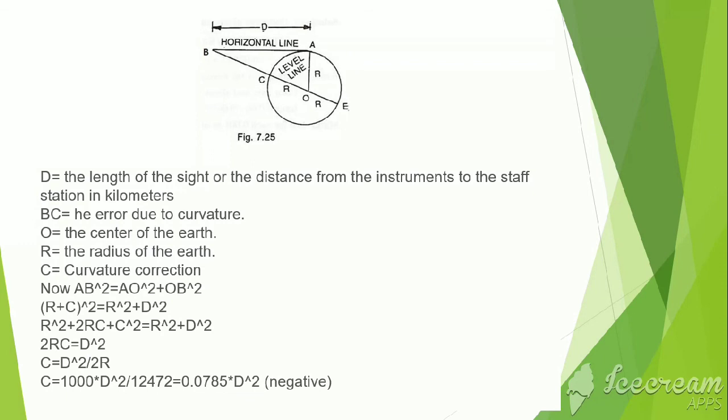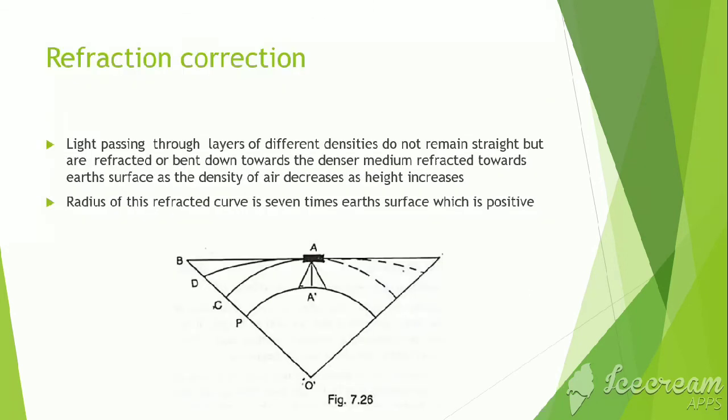So, if we calculate, then we will get C equal to 0.0785 times D^2, which is negative.